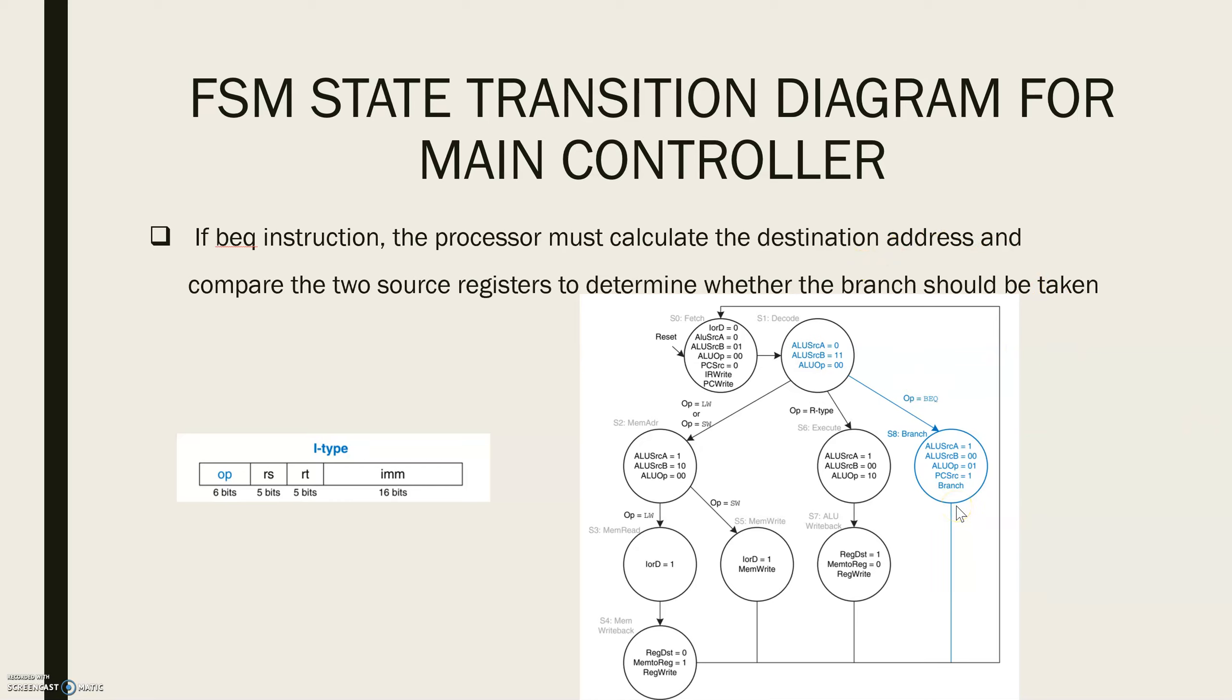Notice however that the ALU was not used during S1, that is the decode stage when the registers were being read. The processor might as well use the ALU at that time to compute the destination address by adding the incremented PC, PC plus 4 to sign immediate multiplied by 4.